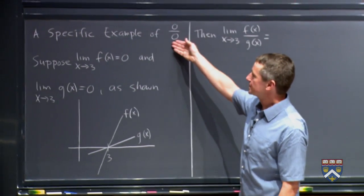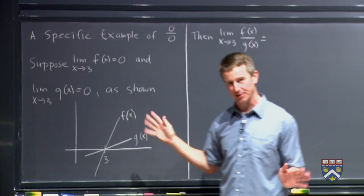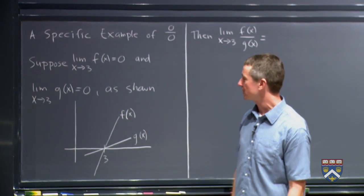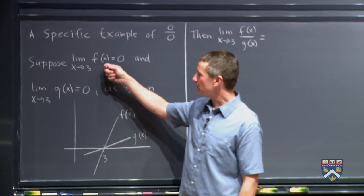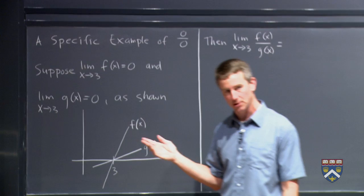So I want to look at an example where we have 0 over 0 and we have two functions. I'm just going to choose x equals 3 to have a specific value that I can draw on the board. So let's suppose that we have two functions and both of them are going to 0 as x gets closer and closer to 3.